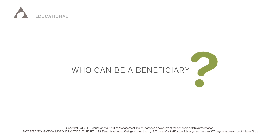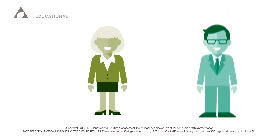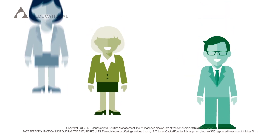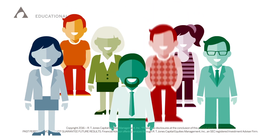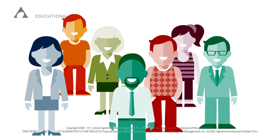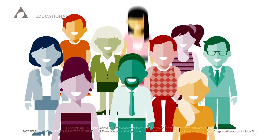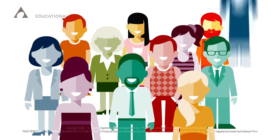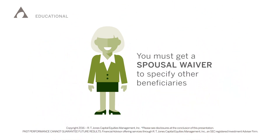Who can you specify as a beneficiary? You can specify your spouse, your children, your grandchildren, a trust, a charity, other people, or some mix of the above. If your spouse is still living, then you must get a spousal waiver to specify other beneficiaries.